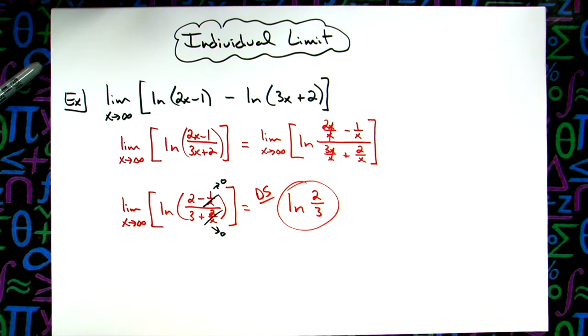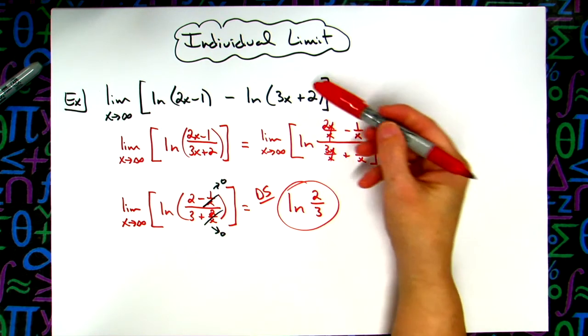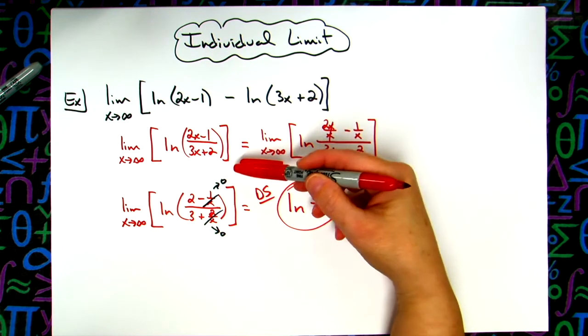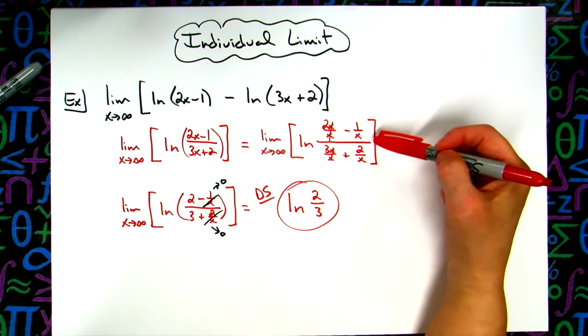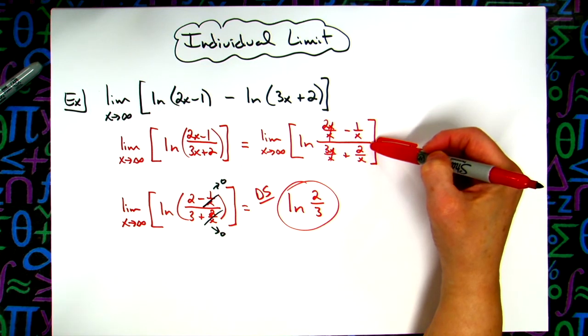Alright, so a pretty straightforward limit as long as you realize you've got to apply log rules first. It makes it a little bit simpler then because you've got that rational function on the inside. And then you can use the trick for helping evaluate limits of dividing through by that highest power of x from the denominator.